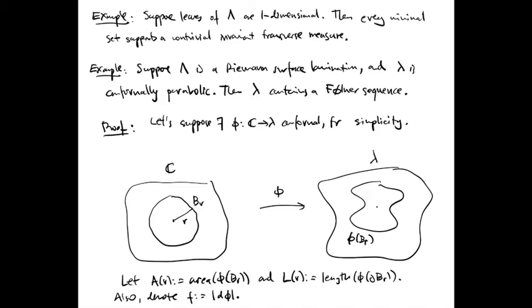A more interesting example concerns Riemann surface laminations with parabolic leaves. It turns out that any parabolic leaf in a Riemann surface lamination contains a Følner sequence, and therefore the lamination admits an invariant transverse measure. Let's prove this.